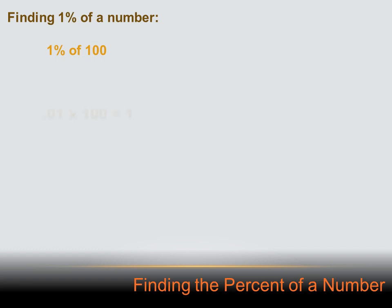Let's say we wanted 1% of 100. We could convert 1% to a decimal by moving the decimal place 2 to the left, so 1% becomes 0.01. Then we multiply 0.01 times 100 and we get 1. But there's a simpler way: if we just take the 100 and move its decimal place 2 to the left, we get 1. And 1% of 100 is 1. So all we had to do was move the decimal two places to the left.